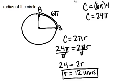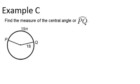Let's look at example C. Find the measure of the central angle or arc PQ. So what we're trying to figure out is this angle right here, which I'll call θ. It has given us the arc length of 15π and also the radius.